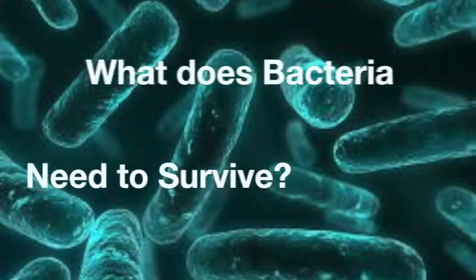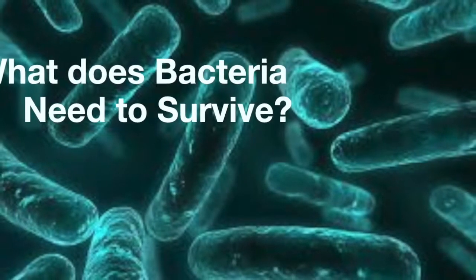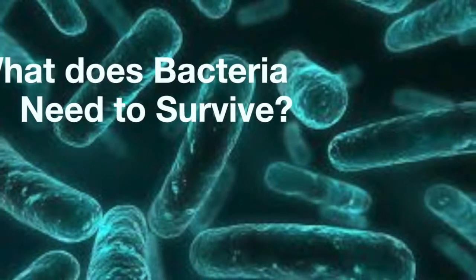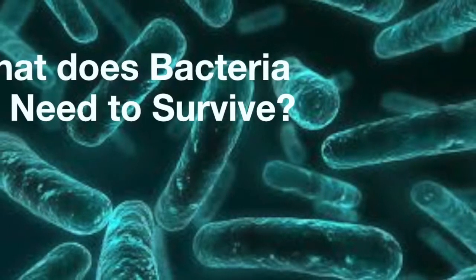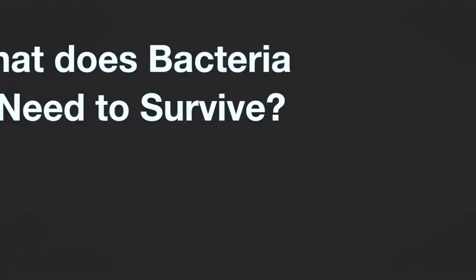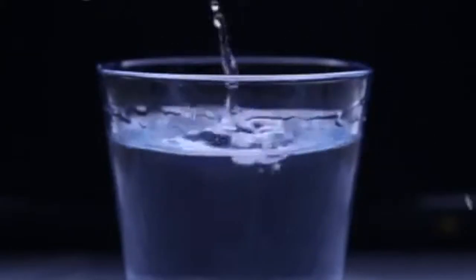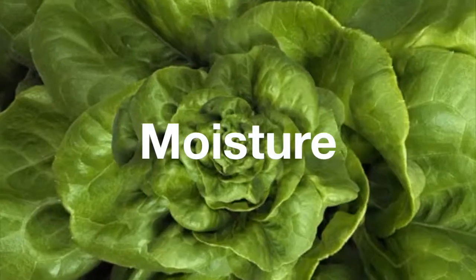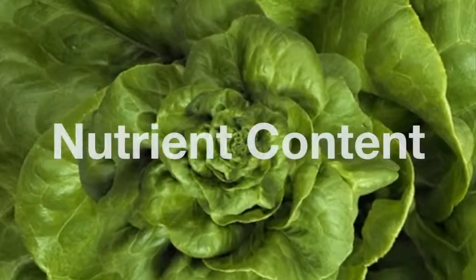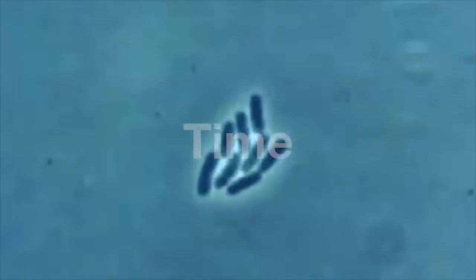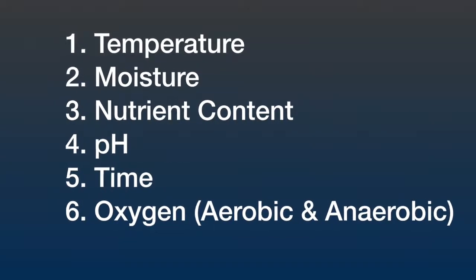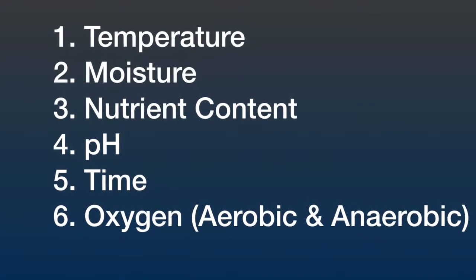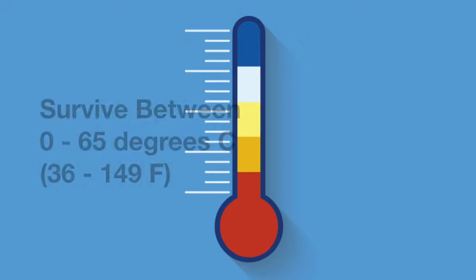Let's take a look at what bacteria needs to grow and survive. There are six elements in the environment that allow bacteria to grow: temperature, moisture, nutrient content, pH, time, and oxygen.